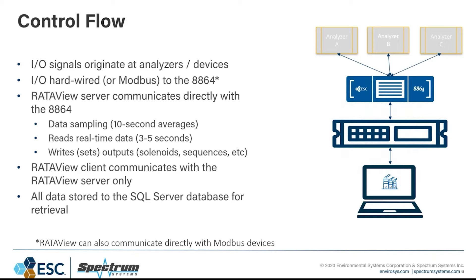The RataVue client is a Windows application — shown on a laptop but can also run on the server itself — that communicates with the RataVue server only. It doesn't communicate directly with any devices or analyzers. All the data retrieved from the 8864 is stored on the SQL server database for retrieval, so any tests you run are stored essentially forever in that database and you can go back and retrieve those at any time. RataVue can also communicate directly with Modbus devices in addition to the 8864.